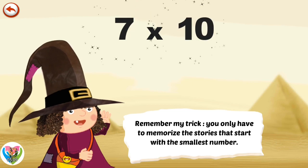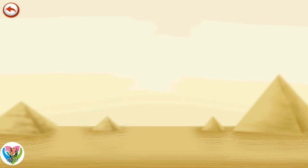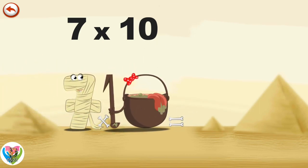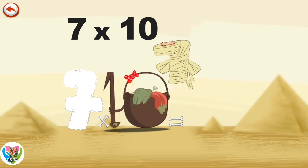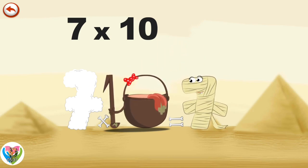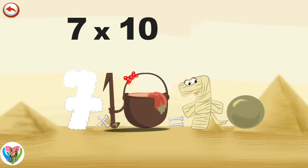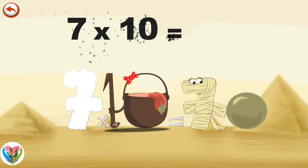Remember my trick. You only have to memorise the stories that start with the smallest number. What's the story of 7 times 10? When Ram 7 meets the potion Magi 10, it makes her very, very hungry. She dives headfirst into the cauldron and comes out feeling very full. She gives an enormous magic burp and blows a bubble in the shape of a zero. 7 times 10 is 70.